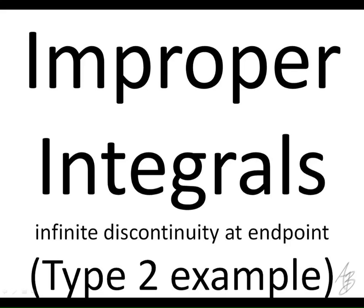These examples we're going to do are the type 2, so we're going to have vertical asymptotes. So what we're doing is we're looking at what happens to an area as we approach a vertical asymptote.